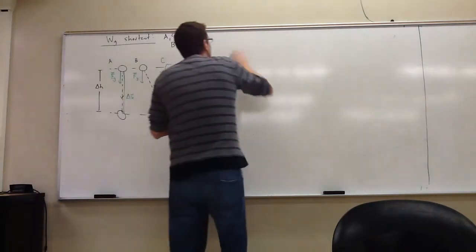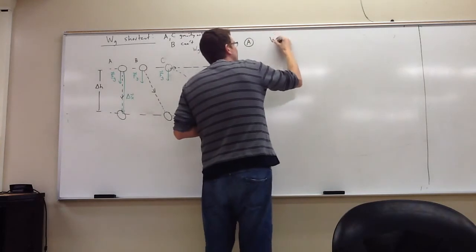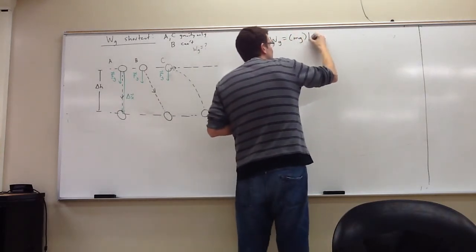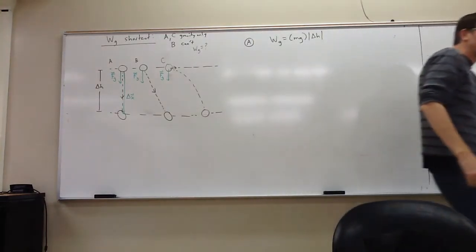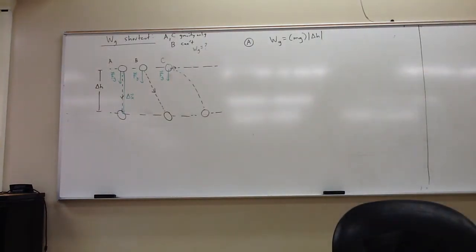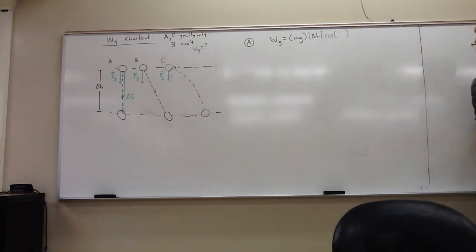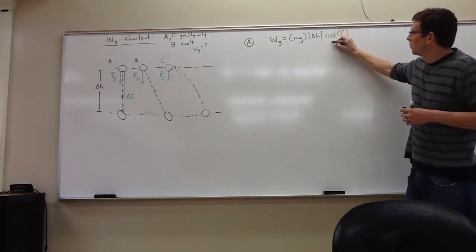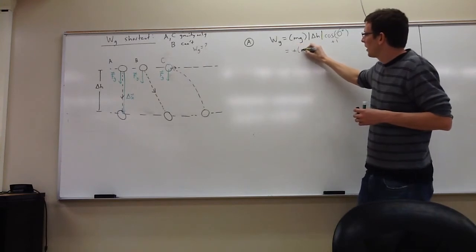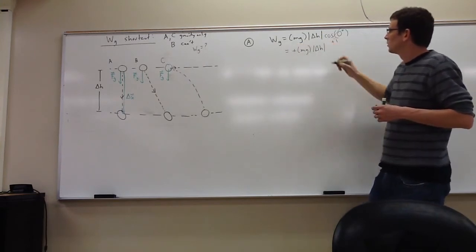Work done by gravity is size of the force. Well, that's mg. Size of displacement. Well, that's just delta H. And let me put in an absolute value sign simply because deltas can generally be negative, and so I just want to be absolutely sure here because I'm going to a lower height. I don't want an extra negative sneaking up on me there. And then cosine of, what's the angle between the force and displacement? Zero. They're exactly pointing the same way. This is plus one, so I get my work done by gravity.